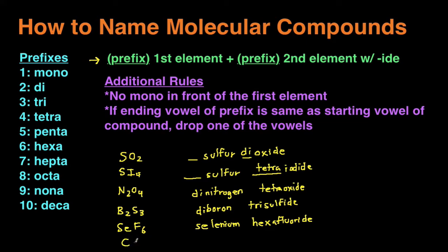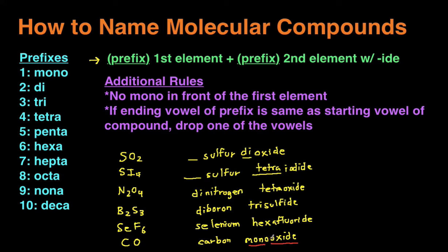Let's do one more example: CO. The first element is carbon. Because there's only one carbon, we just write 'carbon' — we don't use 'mono' for the first element. For the second element, oxygen becomes 'oxide.' We have one of them, and we do use 'mono' for the second element, so we write 'mono' + 'oxide.' But here's the vowel-dropping rule: the ending vowel of 'mono' and the starting vowel of 'oxide' are both 'o,' so we drop one, making it 'monoxide' — not 'monooxide.' The name for CO is carbon monoxide.